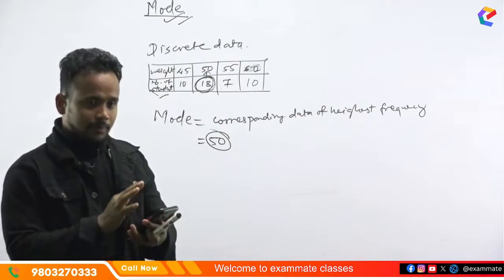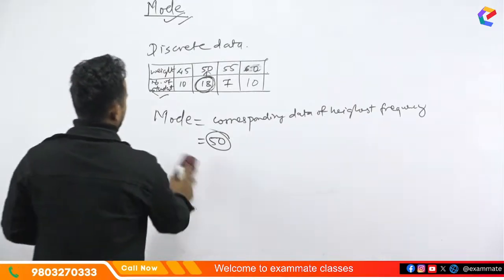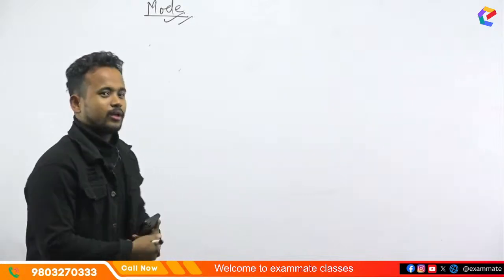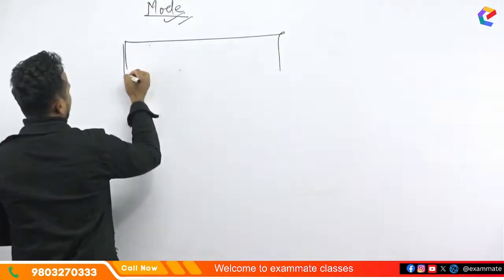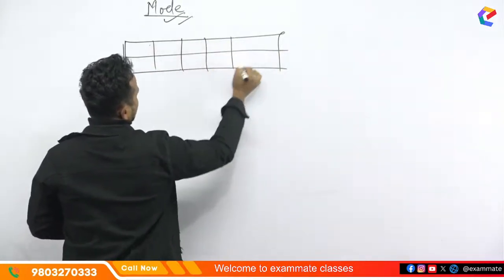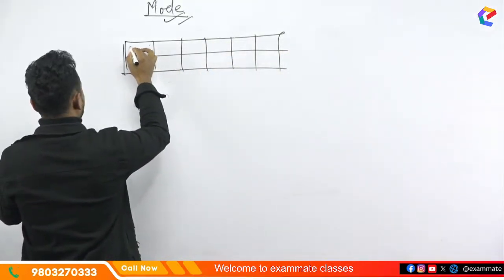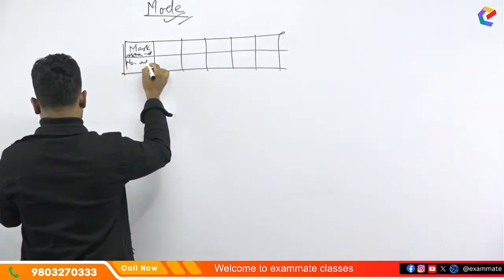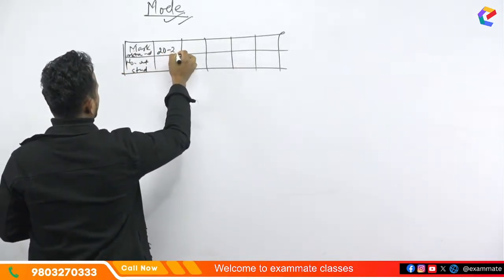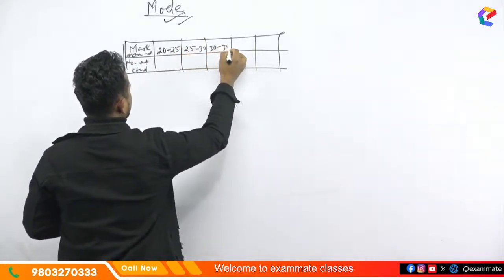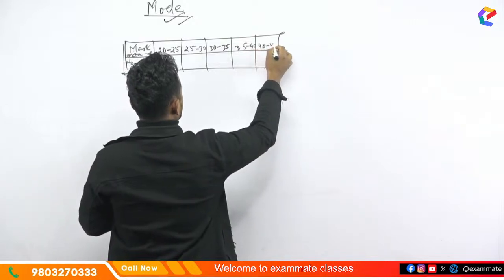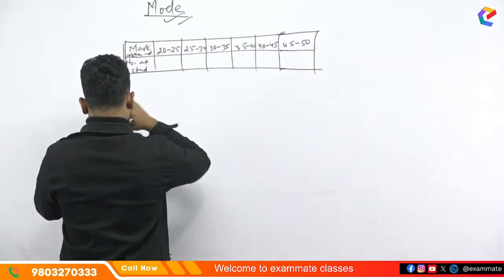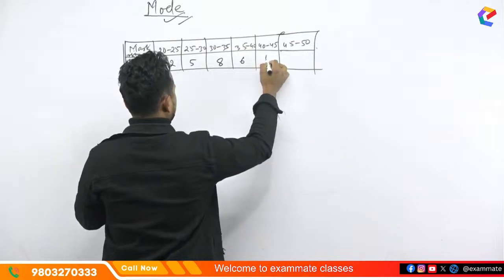That is continuous data. What is the model? That is what our students want. The model is the same. You know this model. Can you repeat the example? I will give you marks obtained and number of students. We have 20, 25, 25, 30, 35, 35, 35, 45, 45, 45. What about 5, 6, 4, 5, 45, 43, 35?